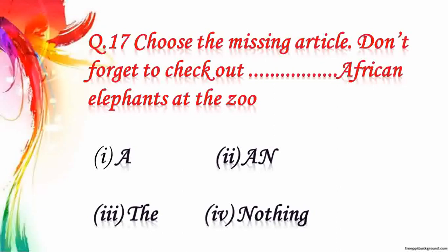Question number 17: choose the missing article. Don't forget to check out dash African elephants at the zoo. We generally use 'a' before a consonant and 'an' before a vowel. 'The' denotes when a noun refers to a unique thing. African elephant starts with a capital letter and it is a unique thing, so the right answer is 'the'. The African elephants at the zoo.